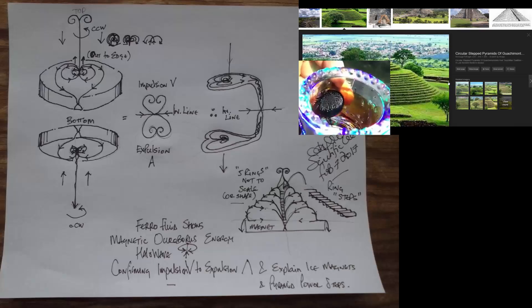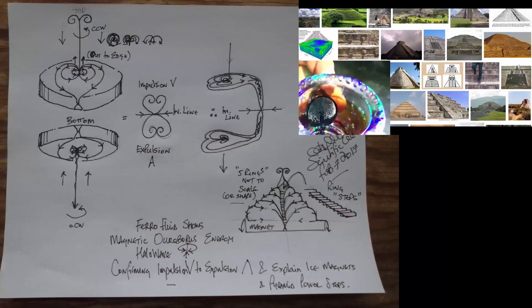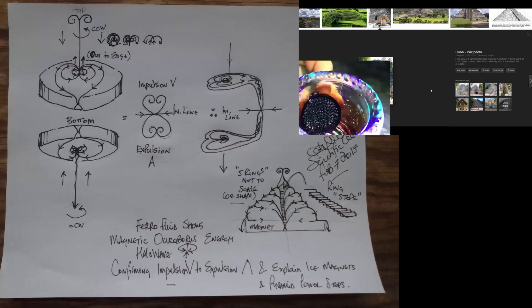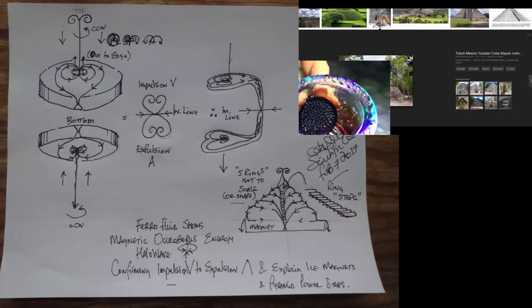I'm going to put up a few pictures which correspond to what I've shown there. Ferrofluid shows the magnetic ouroboros energy halo wave, confirming impulsion V and expulsion A,